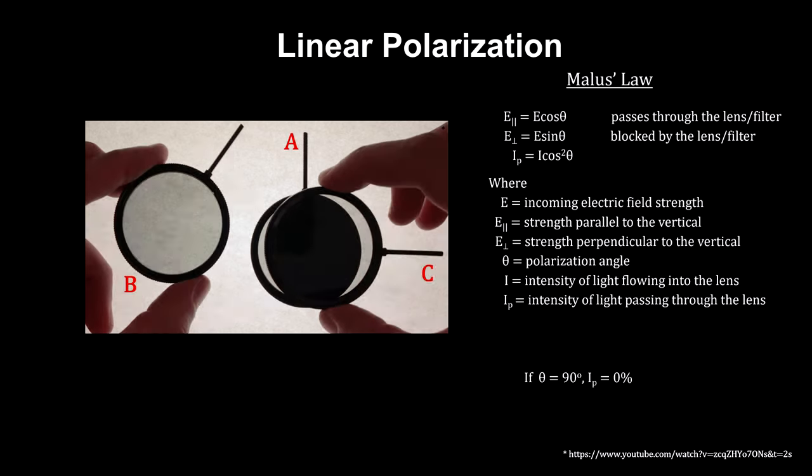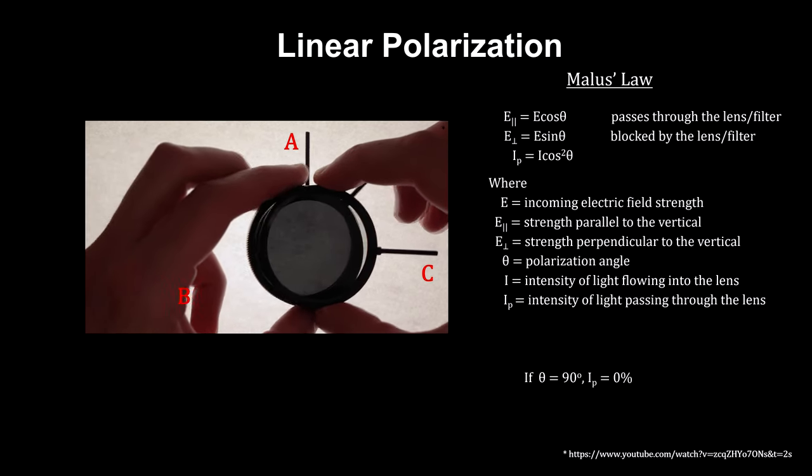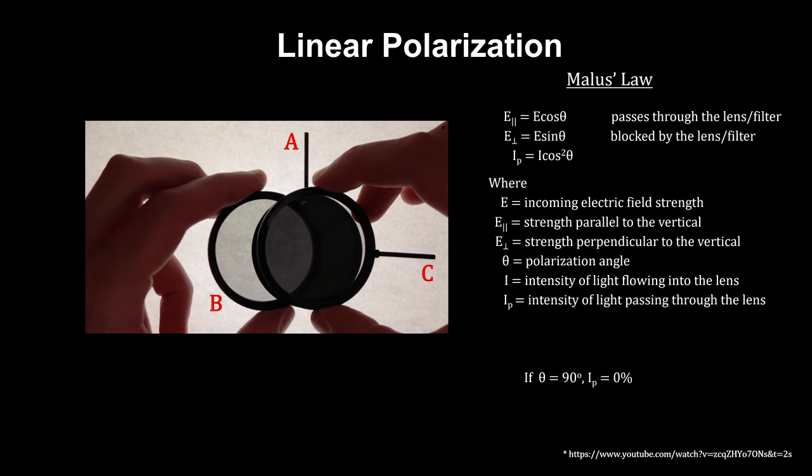Now if we bring in a third lens, lens B, and place it in between the first two, and angle it at 45 degrees, we see that light that could not make it through C before is now coming through. In other words, lens B, designed to reduce the amount of light that reaches C, actually enables more light to get through C.